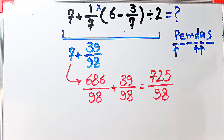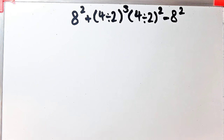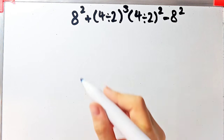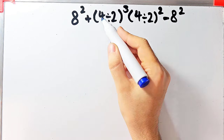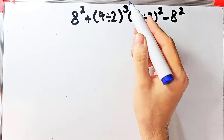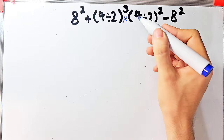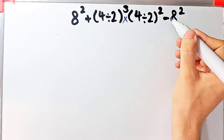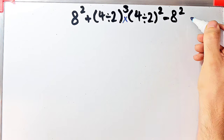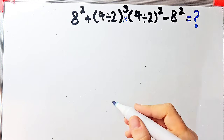Let's solve another question about the PEMDAS rule. Eight to the power of two, plus open parenthesis four divided by two close parenthesis all to the power of three, then times open parenthesis four divided by two close parenthesis all to the power of two, minus eight to the power of two. What is the answer of this question?